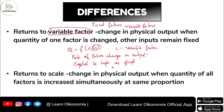Capital remains fixed — that is something related to returns to variable factor. What about returns to scale? In the case of returns to scale, we also consider output as a function of labor and capital, but here we are increasing both inputs simultaneously and at the very same proportion, and we are seeing the effect of that on output. For example, if we increase labor by 20%, we also increase capital by 20%, and observe the role of this change in output.